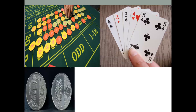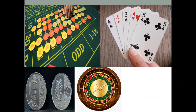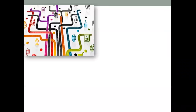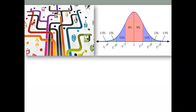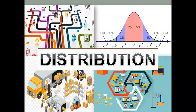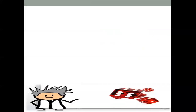I have here a gambling table in a casino, cards, coins, roulette wheel, and dice — these show the word 'probability.' Next, I have here paths for delivery, a bell curve or graph, supplying of goods, and sharing among a group — these show the word 'distribution.' Adding the two words, we have simply shown our topic for today, which is Probability Distribution.